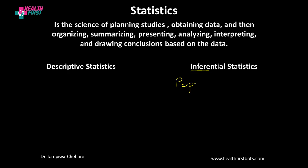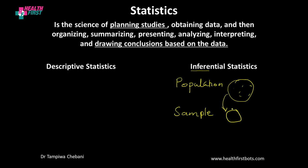For inferential statistics, we have a population and we have a sample. From the population, we draw a small representation of the population, and we call that a sample. There are methods by which we carry out this process that make sure this representative sample is as fair as possible, meaning it is a true representation of the entire population of interest. We will discuss those methods in future videos.